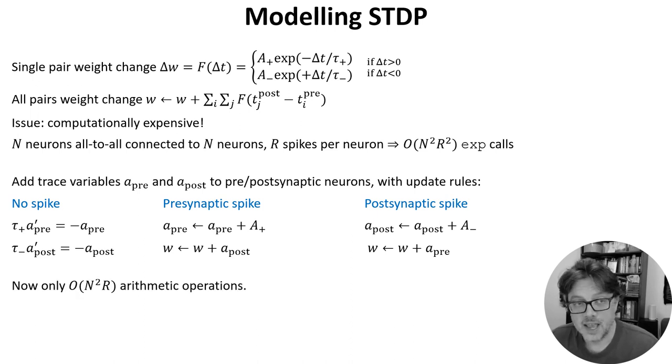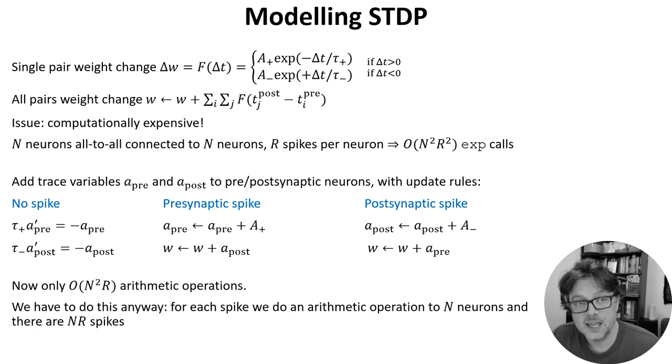Computationally, we now only have to do N squared R operations. And rather than exponentials, they're now all arithmetic, which is much quicker and more efficient. Not only that, but it's actually essentially free because we had to do this many operations anyway. For each spike at a presynaptic neuron, we have to add a value to each postsynaptic neuron it's connected to. There are N neurons affected by each spike, and there are NR presynaptic neurons. So that's N squared R operations we would have had to do anyway.